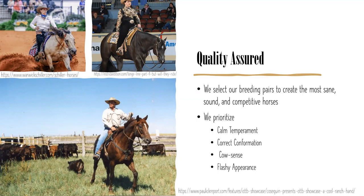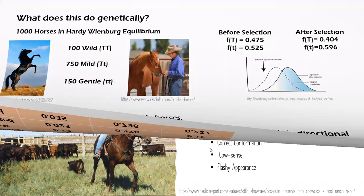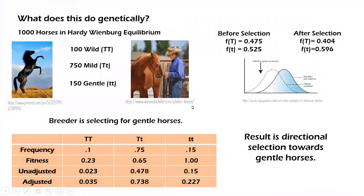This is where selection comes into play. This breeder looks for several favorable qualities that he wants his horses to have and selects his breeding stock appropriately. If any horses display unwanted traits, like a fear of cattle or kissing spine, those horses will not be bred. Let's focus on the trait the breeder deems most important — temperament — and see what selecting for calmer horses does genetically.